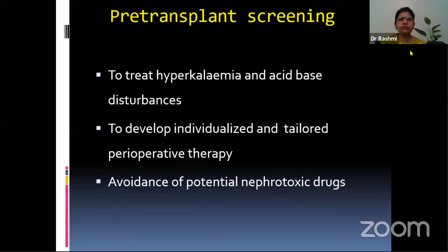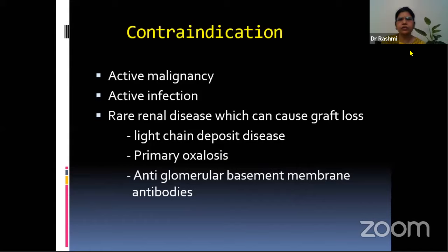We have to treat any hyperkalemia and acid-base disturbances, develop an individualized and tailored perioperative therapy, and avoid any potential nephrotoxic drugs. The most important contraindications are active malignancy and infection. Besides this, certain rare renal diseases can cause graft loss, and these patients should be selected for transplant with caution, such as light chain deposit disease, primary oxalosis, and anti-glomerular basement membrane antibodies.